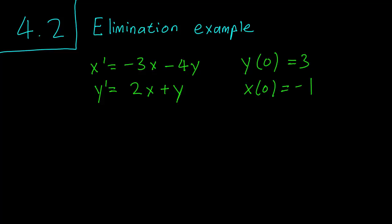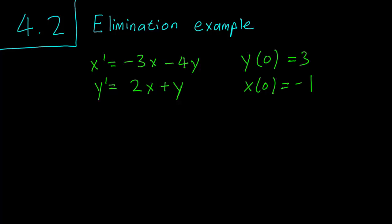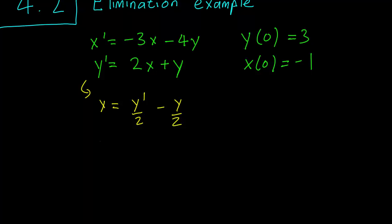This is our system and the first thing we want to do is write x in terms of y. We take the second equation to write x equals y prime over 2 minus y over 2. Taking the derivative of that, we find that x prime is equal to y double prime over 2 minus y prime over 2. We can substitute this all into the first equation.